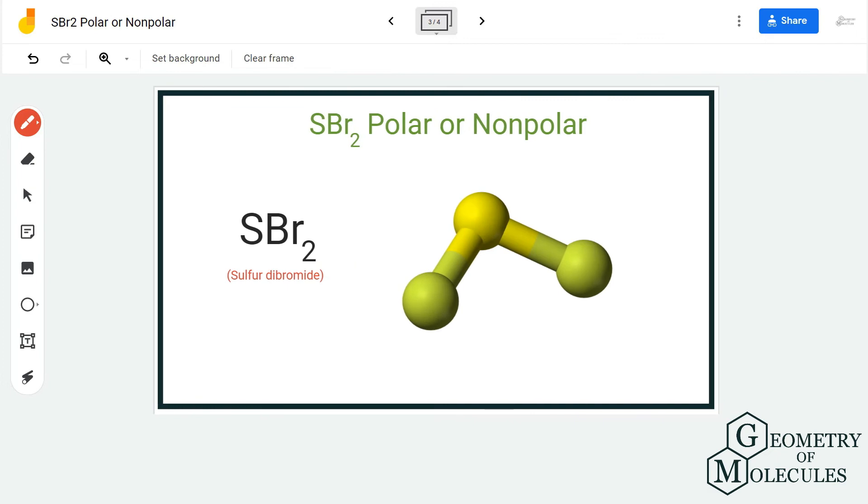This is because of the lone pairs that are present on sulfur atom that causes this bend in the structure. Even though this is a non-polar molecule, there might be a slight polarity. However, as the difference of electronegativities is not higher than 0.5, we consider this molecule as non-polar covalent.